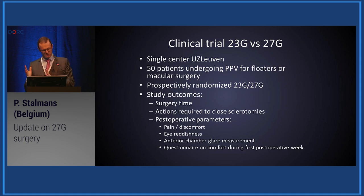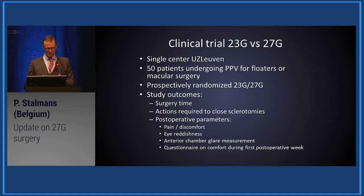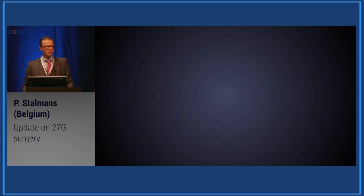We will conduct a clinical trial to prove that 27-gauge leads to better outcomes. Starting as a test trial at my center, we will compare patients the day after 23-gauge versus 27-gauge surgery, looking at parameters such as surgery time, action required to close sclerotomies, and post-op parameters including pain, discomfort, redness, flare in the anterior chamber, and how patients feel. We hope to extend this into a multicenter trial to prove that 27-gauge outperforms the rest. Thank you.